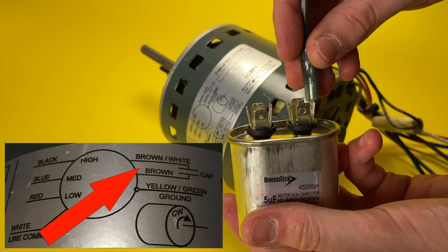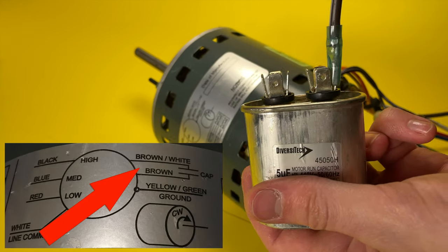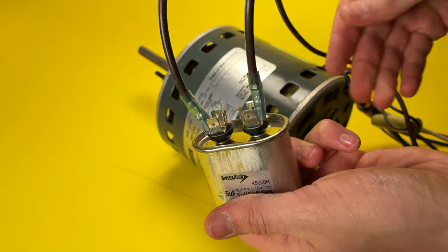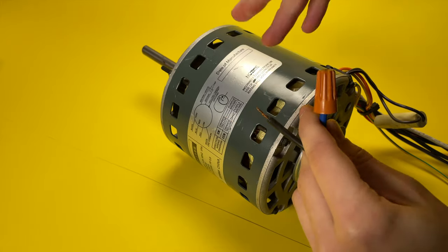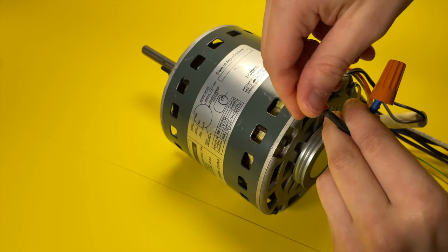I also attach an appropriate capacitor to the motor's capacitor wires. Without this capacitor, the motor wouldn't work correctly. I then gave the exposed terminals a good wrapping in UL-listed electrical tape. I then put a wire nut on the remaining exposed wires so I don't get shocked if I accidentally bump into them.